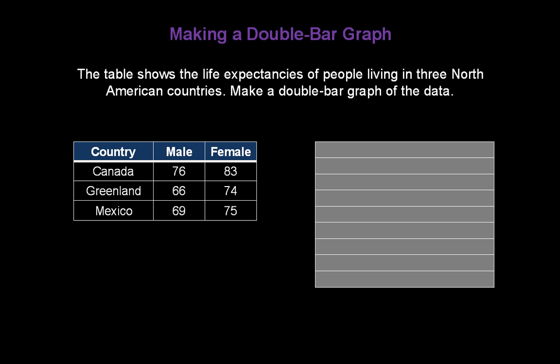Now let's make our own double bar graph. The table shows the life expectancies of people living in three North American countries. We want to make a double bar graph of the data. The first thing we should do is make sure we understand the data in the table. In the very first column are the three countries, in the second column the male ages and life expectancy, and in the third column the female life expectancy ages.